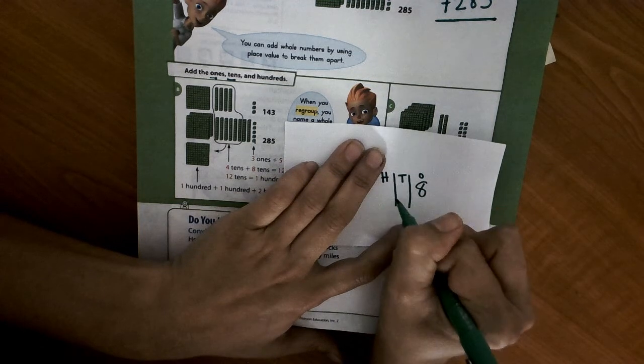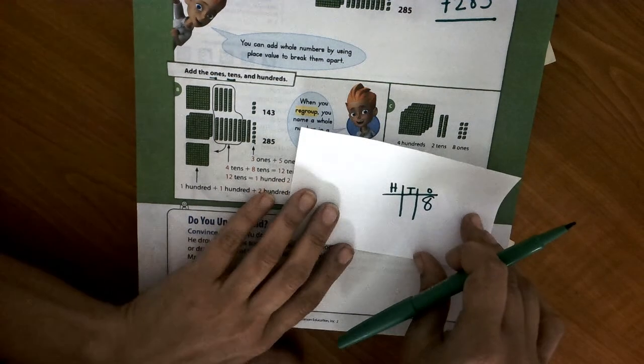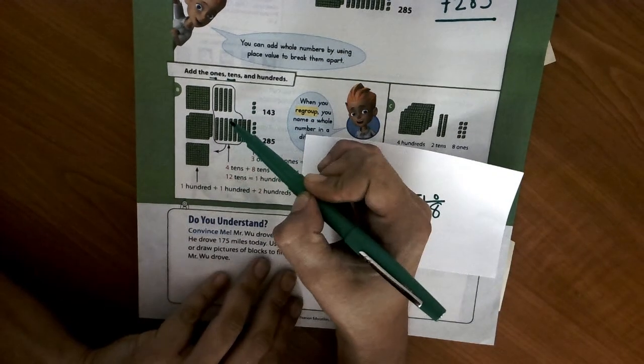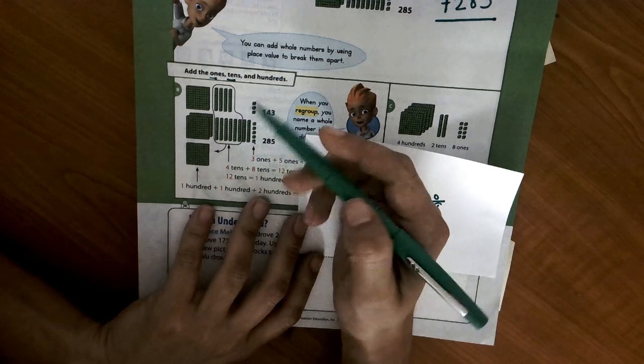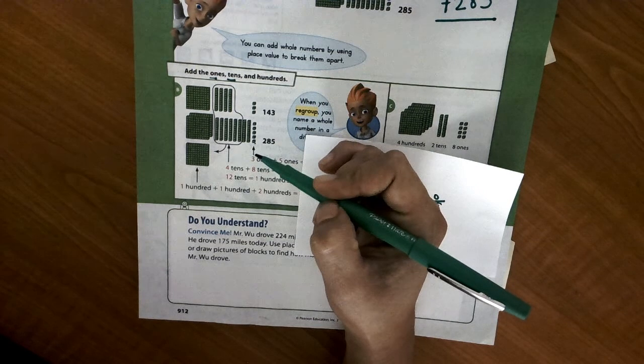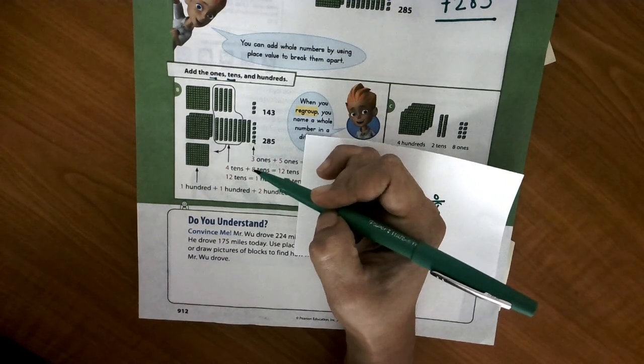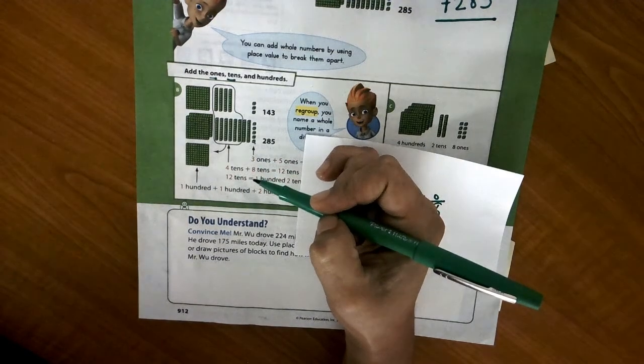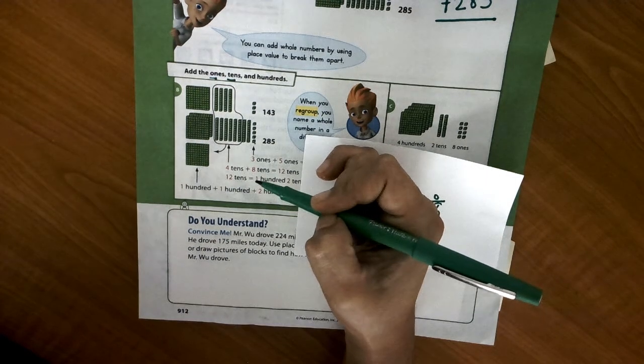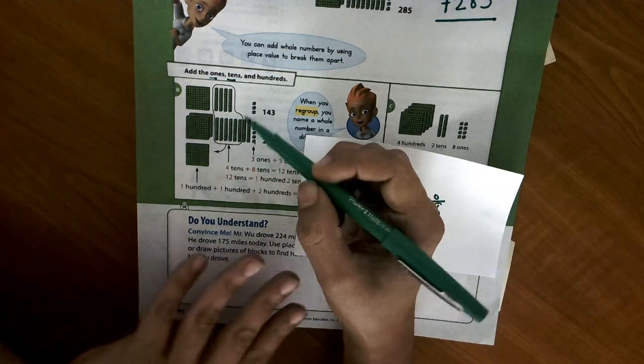So I'm just going to write my place value. Now we don't need to regroup, so then we go to the next place value and add our tens. Now remember, our magic number is 10. And if we get to 10, then we need to regroup. Because if we remember, our poem says 9 or less, let it rest. But if it's 10 or more, you have to carry it next door.